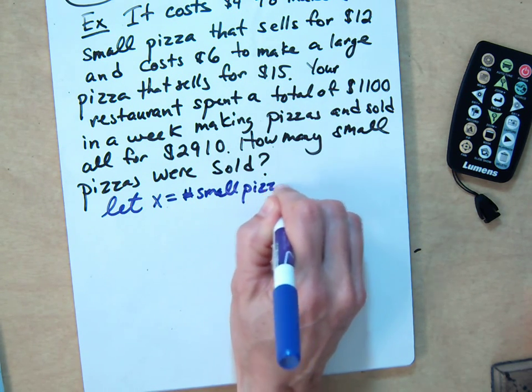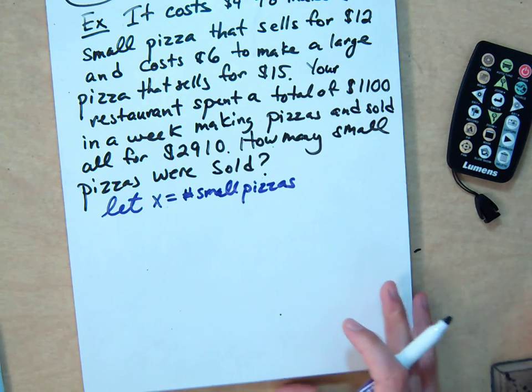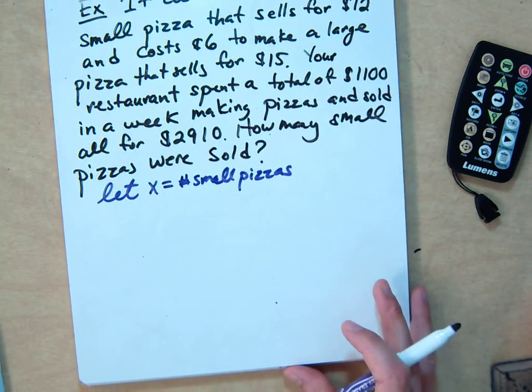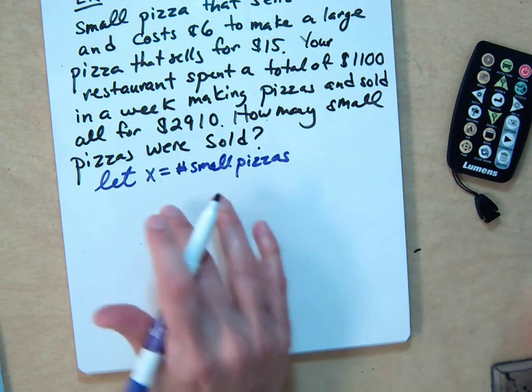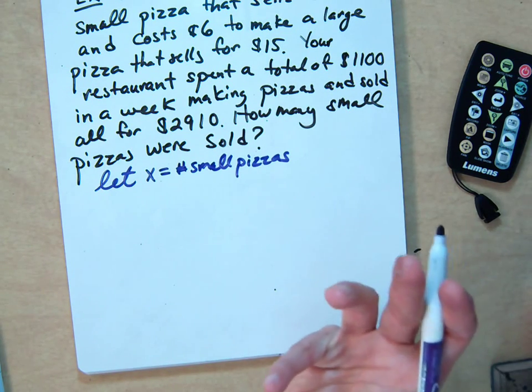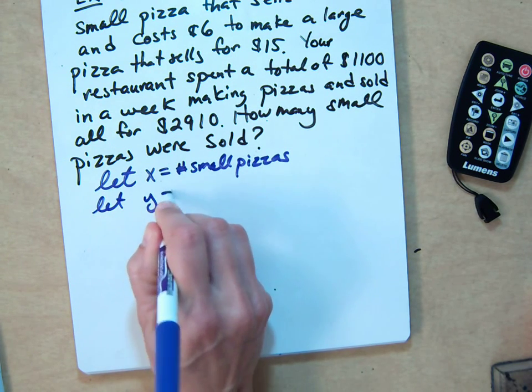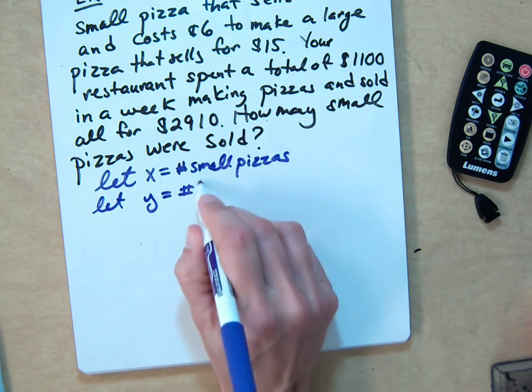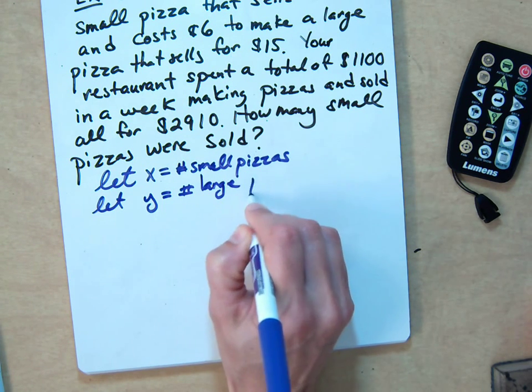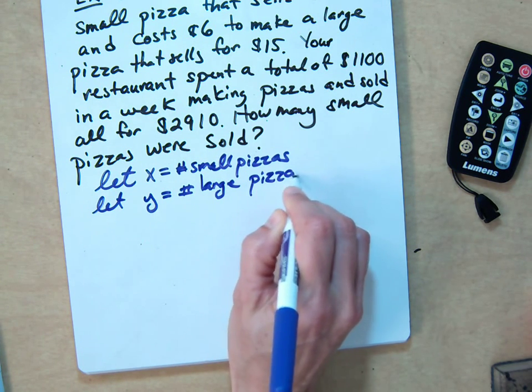That's what you're looking for. So that's usually key to getting started on these word problems. What is it asking for? So x is the number of small pizzas. What's the only other quantity in this problem for y? Let y equal the number of large pizzas.